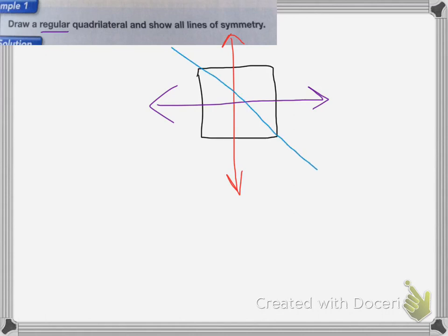I have one that goes from corner to corner, this way, because that means this triangle and this triangle are the same. And my last one goes through the other two corners. So a square has four lines of symmetry.